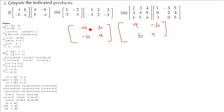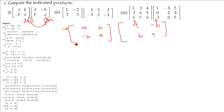We take the first row of the first matrix and then the columns of the second matrix, then we take the second row and follow the same procedure. The column count of the second matrix must equal the row count of the first matrix, and the result will have the row number of the first matrix and the column number of the second matrix.